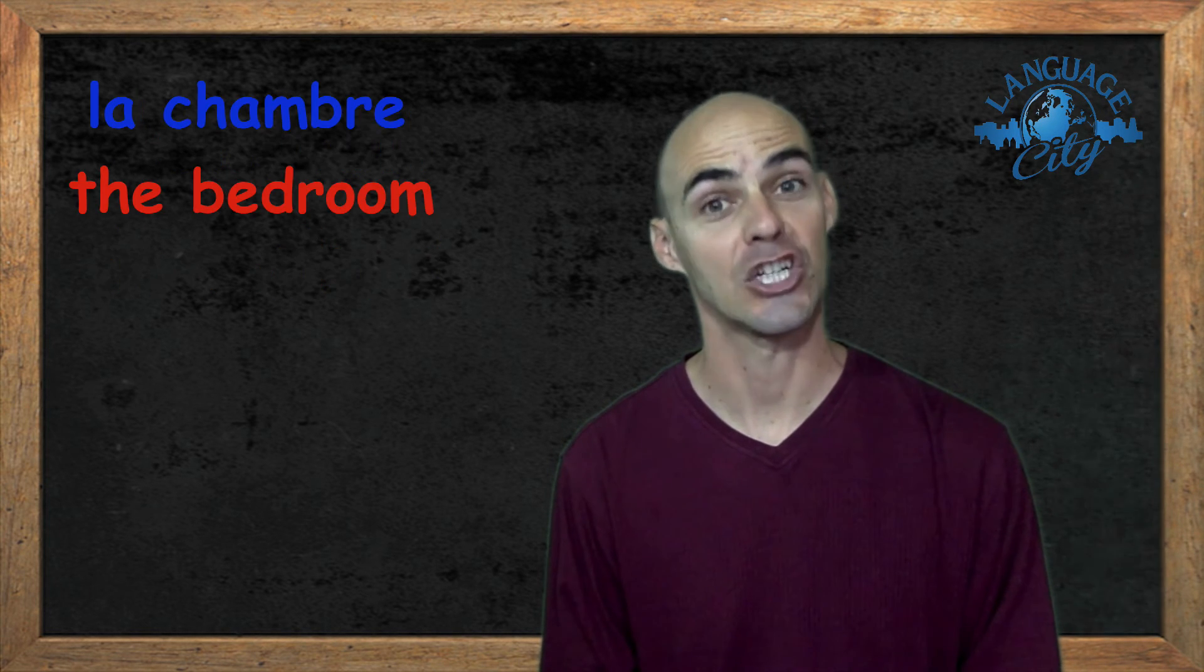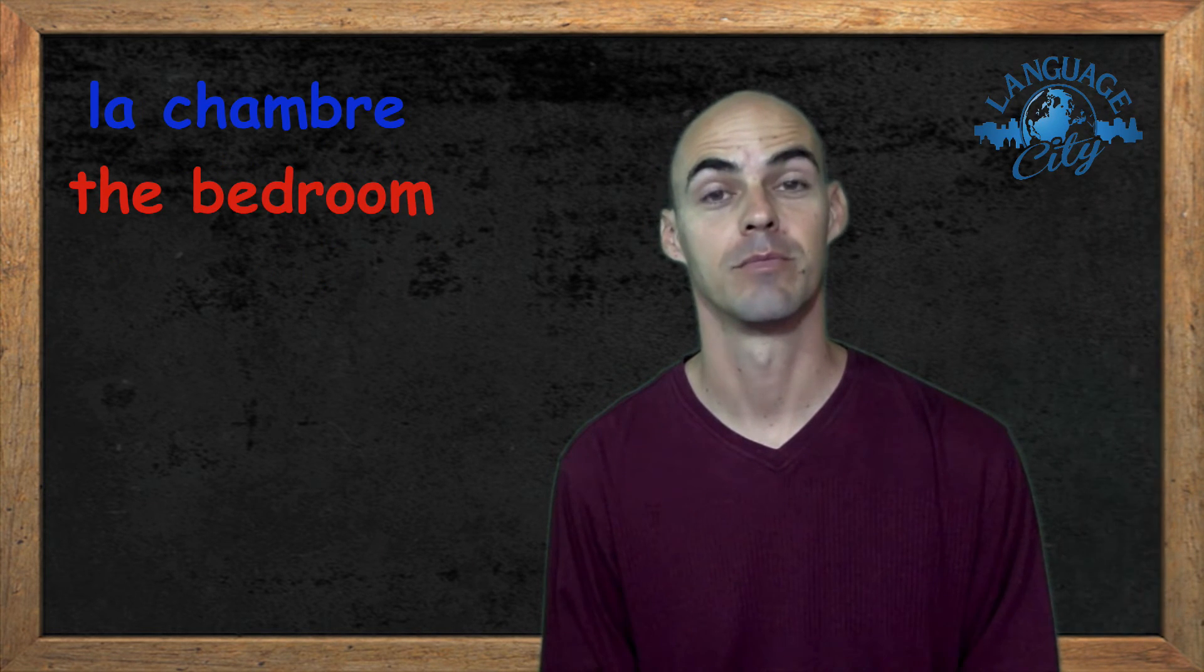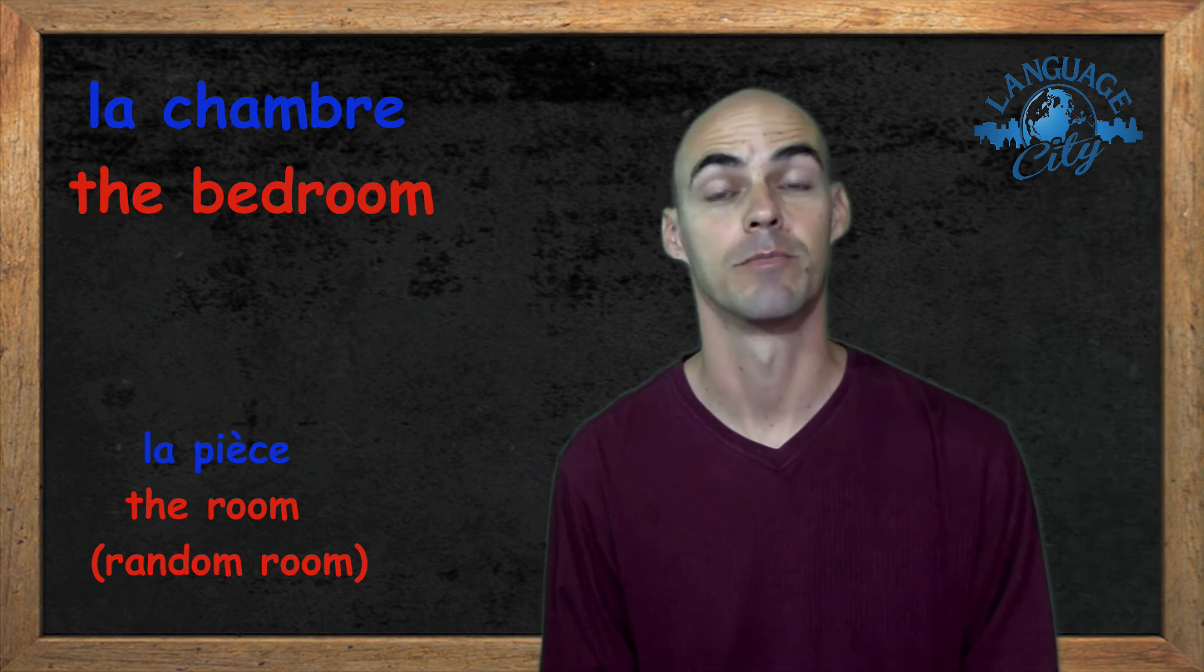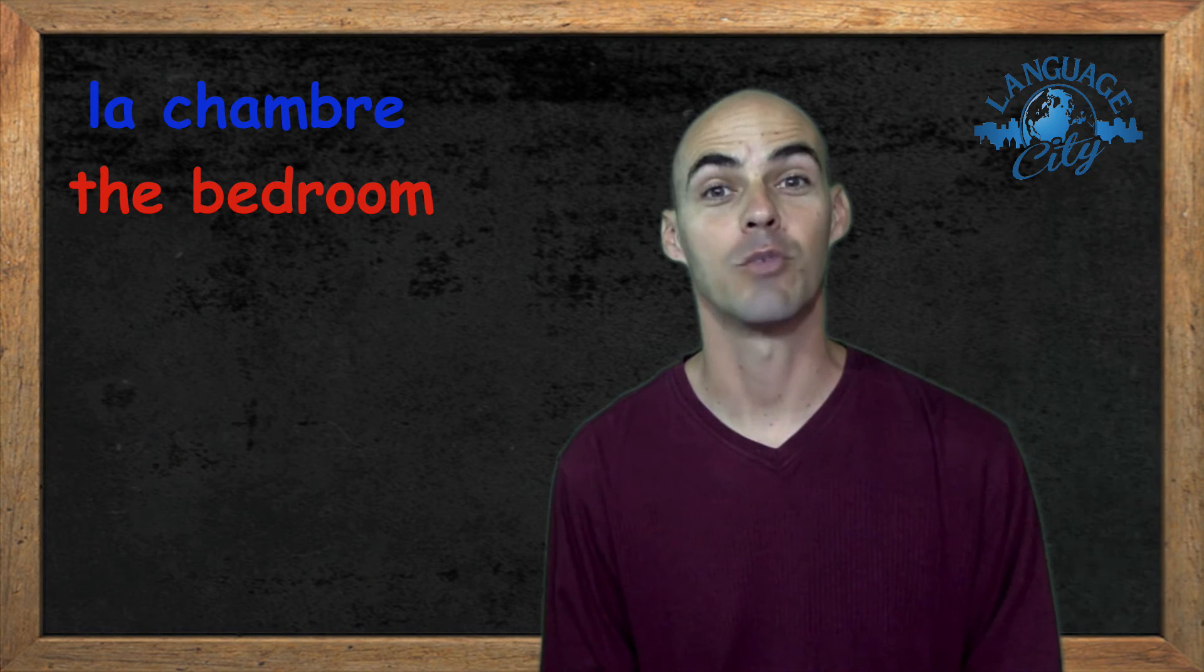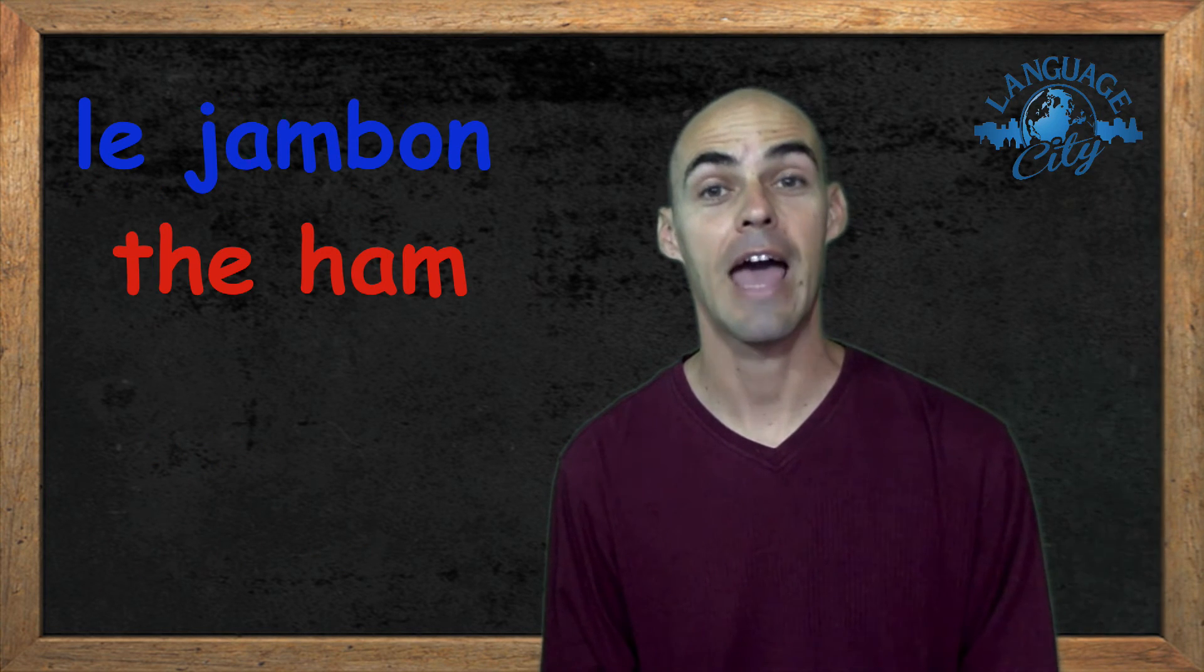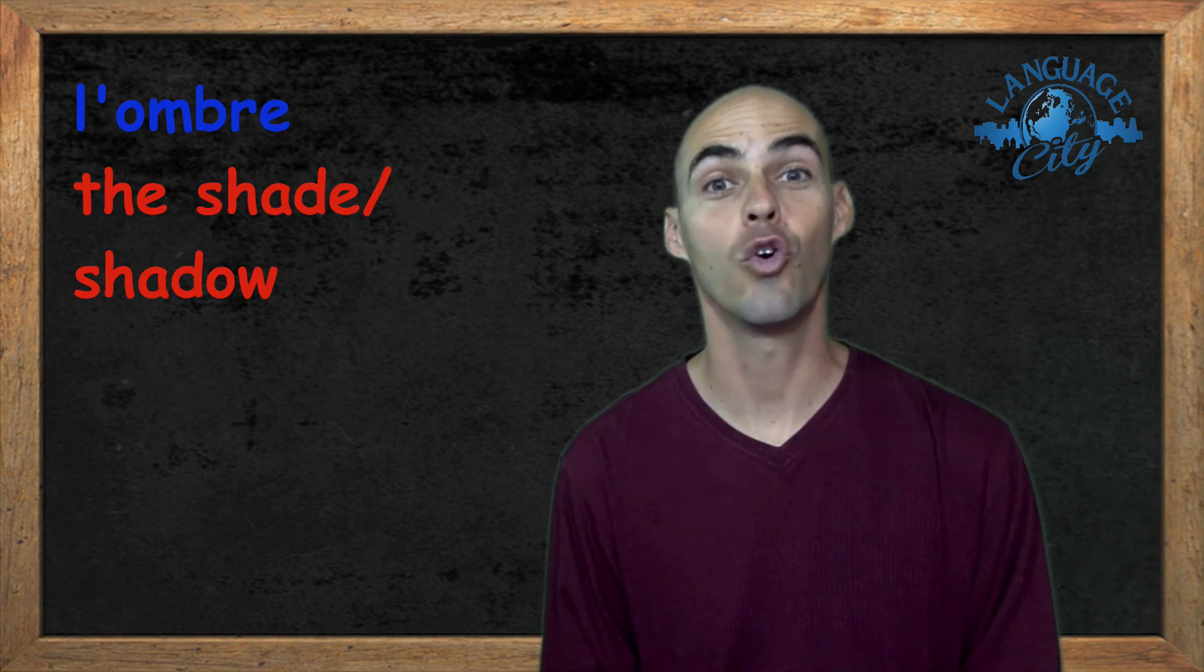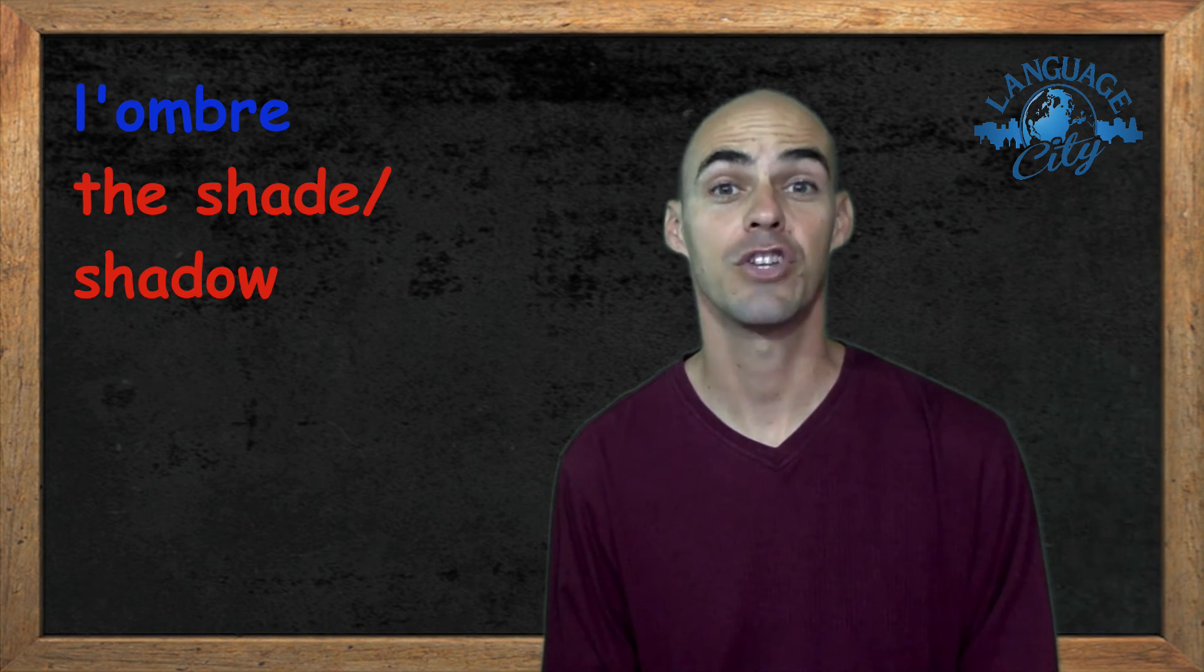Word number ten was la chambre, the bedroom or the room. Don't get it mixed up with la pièce, which is just a room, a random room. Number eleven was le jambon, ham. Number twelve was l'ombre, the shadow or the shade.